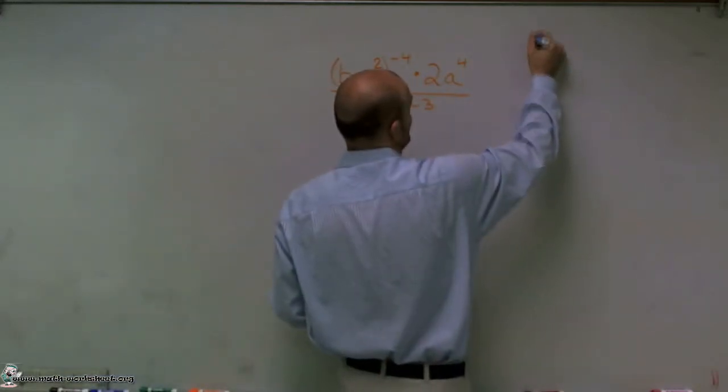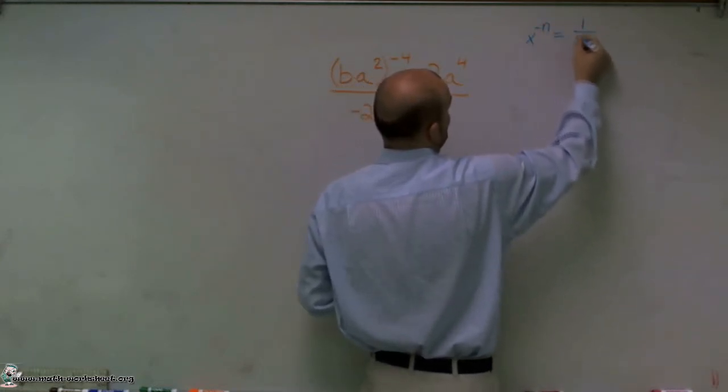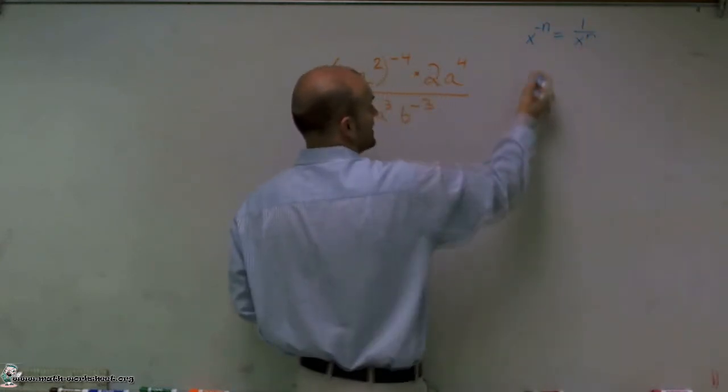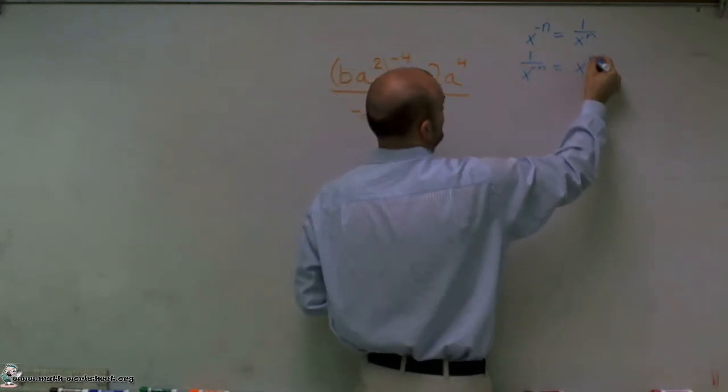Well, the first one is if I have x to the negative n, that is the same thing as 1 over x to the n. And 1 over x to the negative n is equal to x to the n power.